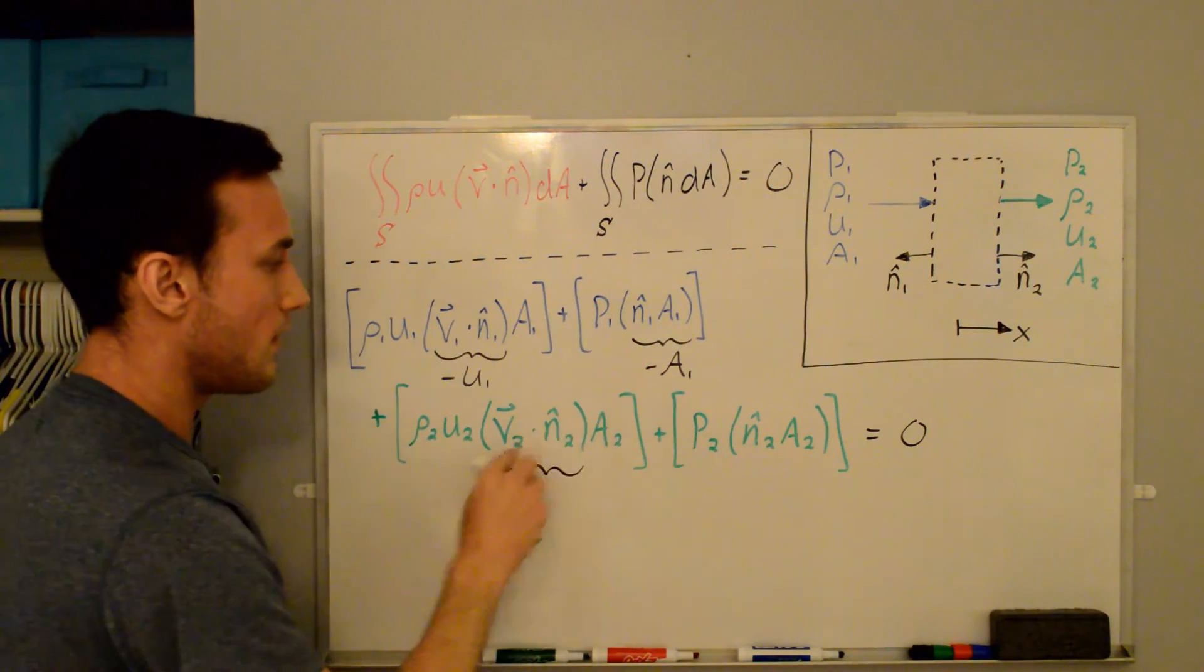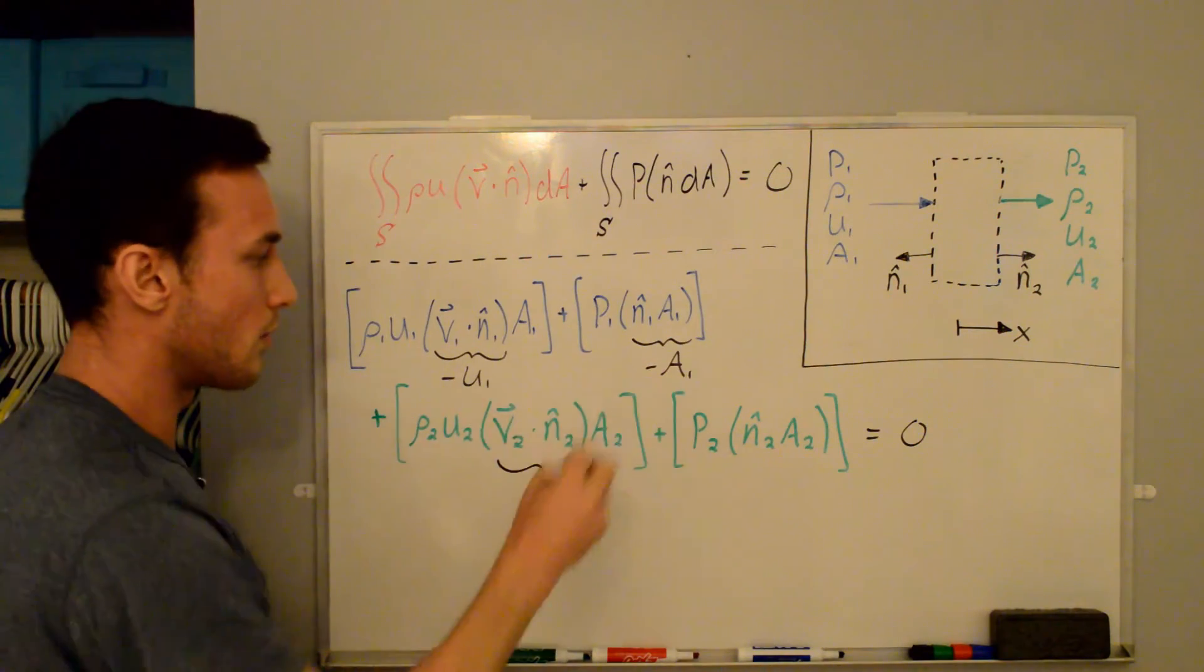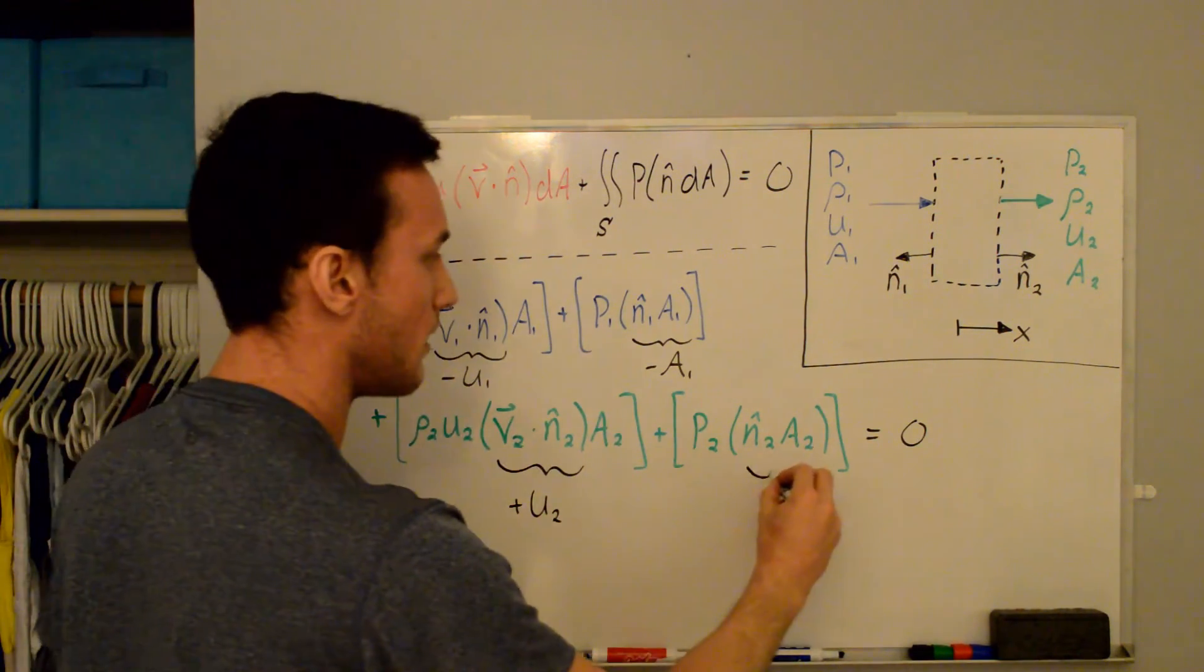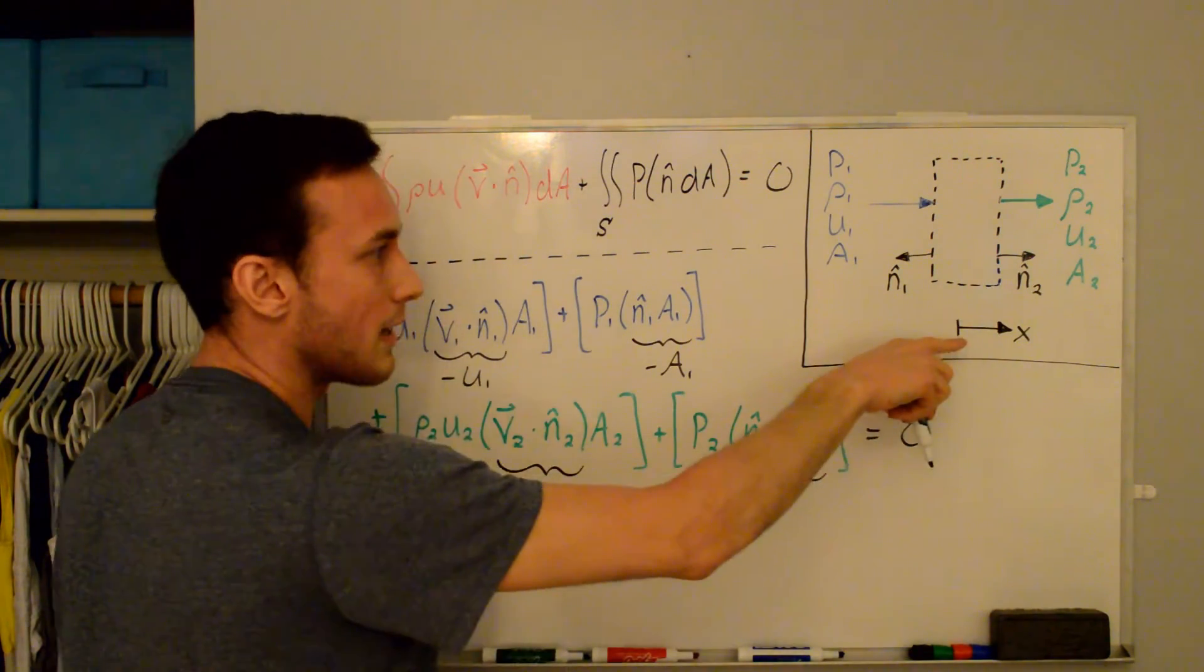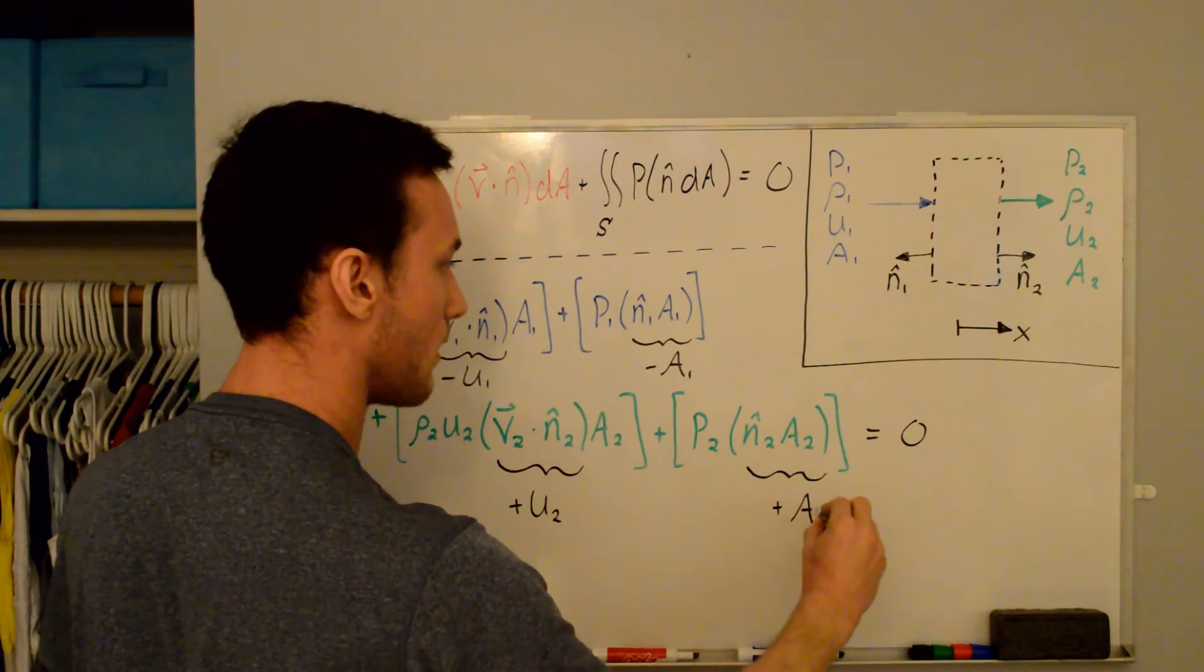Now here, the velocity vector is pointing in the same direction as the outward normal. So here we have a positive u2. And then here, because the outward normal is pointing in the positive x direction, we have positive a2. And now we can simplify this.